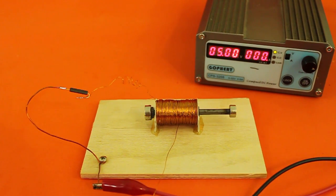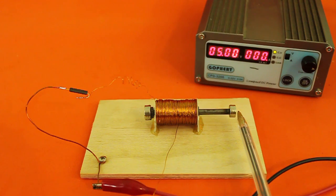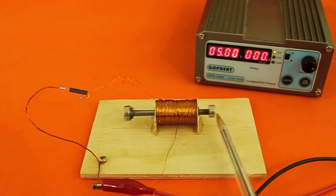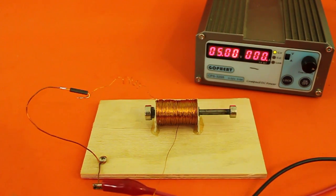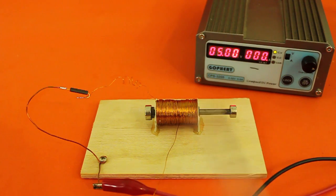Now the only thing that we need to convert this into a motor is some kind of mechanism that brings the axis back to the left when the solenoid pushes to the right. Some kind of spring on the right side.